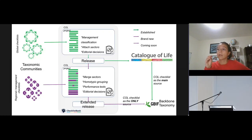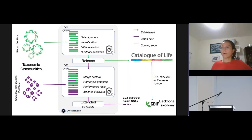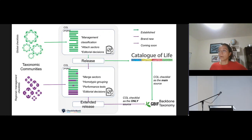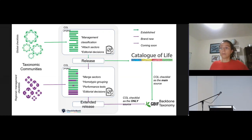We are trying to get this information into the Checklist Bank workbench where we have a working project, and where the tool performs different steps of this process: merging sectors, doing the homotypic grouping and including editorial decisions, and then making different performance tests until we get an extended release that might be reliable. We are planning to have this extended release as the only source for the GBIF backbone. Currently the Catalog of Life is the main source of this backbone taxonomy, but further on the only source will be the extended release.